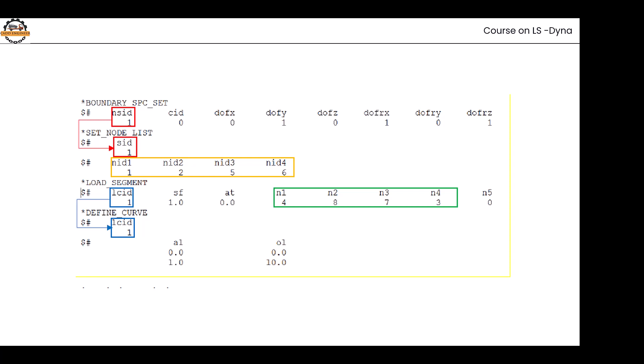The values of our curve—for example, a displacement-time curve—has displacement on one side and time value on the other. Initially, my time and displacement are both at zero, then displacement is one and time is 10. This is how we define values so the curve gets ready. Then we apply this load to any body using this curve by defining that load curve ID.